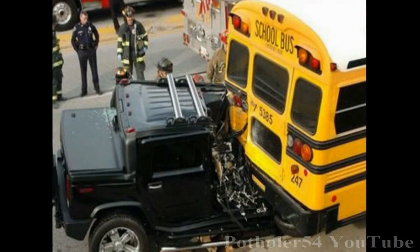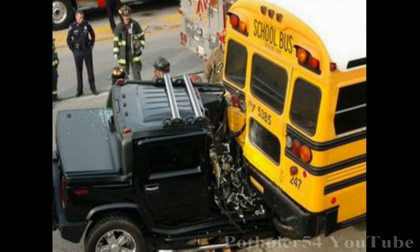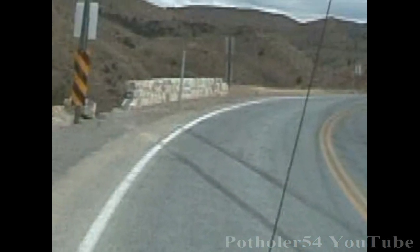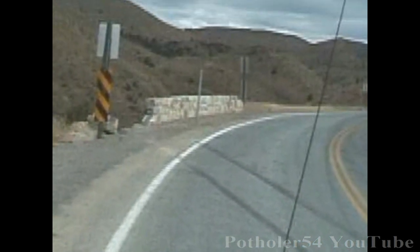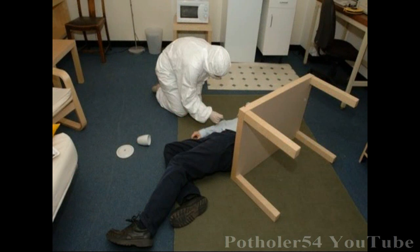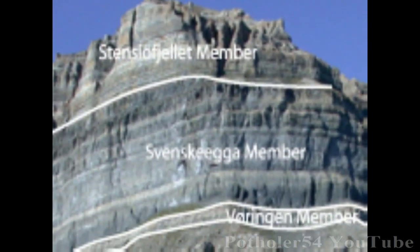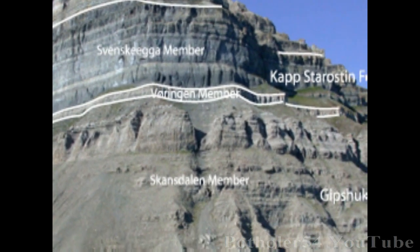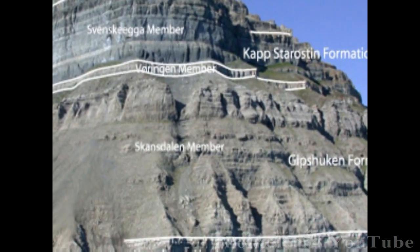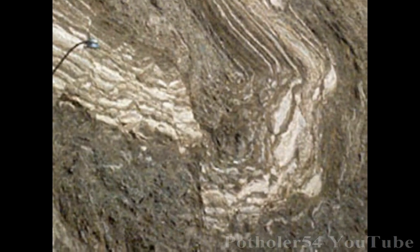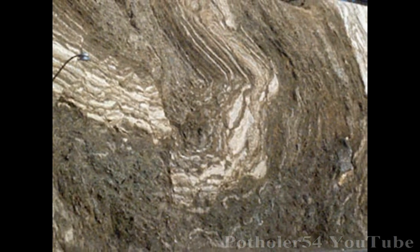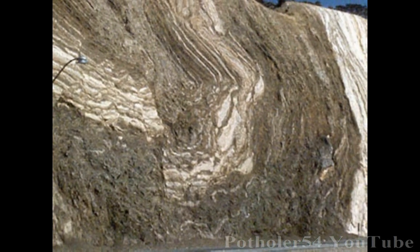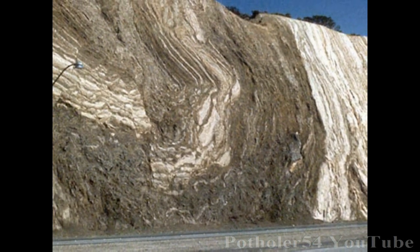Deducing what happened in the past is a process we go through every day. If we weren't there, we have to work it out by observation and deduction. Each sedimentary rock on Earth tells the story of how it was formed and under what conditions. Geologists can identify ancient earthquakes and floods just as you can identify recent ones.